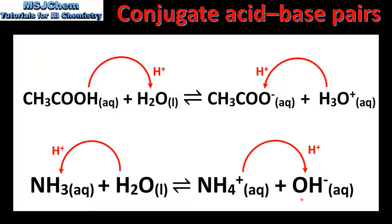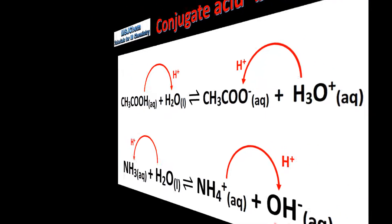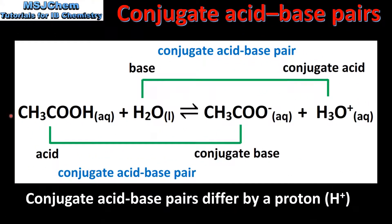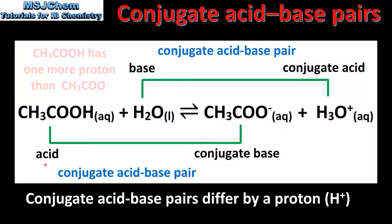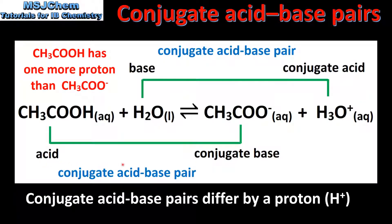Next we'll identify the conjugate acid-base pairs in each of these reactions in more detail. Conjugate acid-base pairs differ by a proton, which is a hydrogen ion. So in the forward reaction ethanoic acid is the acid and the ethanoate ion is the conjugate base. These two are known as a conjugate acid-base pair, and as we can see they differ by a proton which is a hydrogen ion.